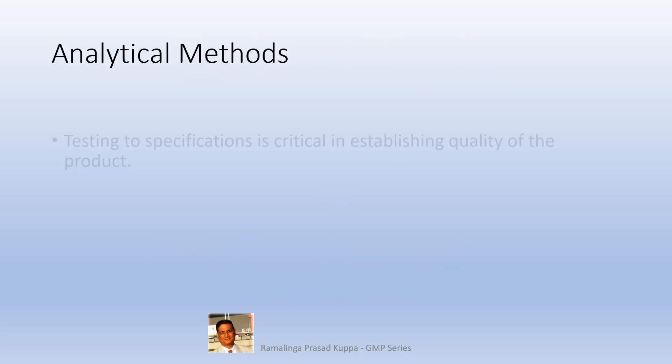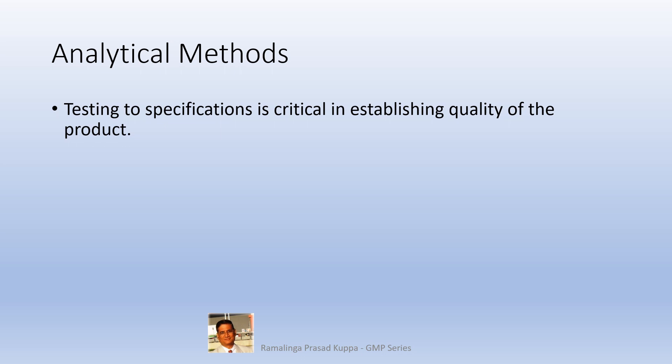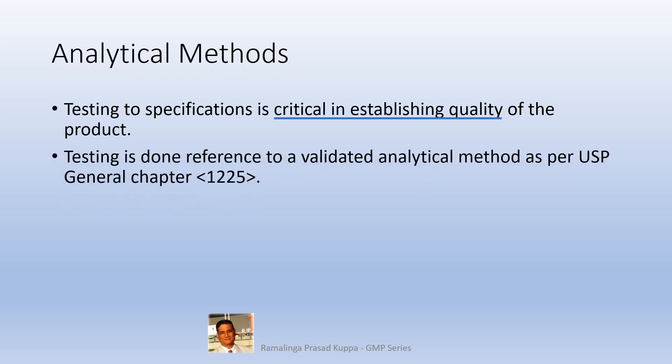Analytical methods testing to specifications is critical in establishing quality of the product. The main purpose and intent of any analytical method is to obtain consistent, repeatable, and accurate results all the time. Incomplete and unvalidated methods are not suitable to achieve this status. Testing is done with reference to a validated analytical method as per USP general chapter 1225.